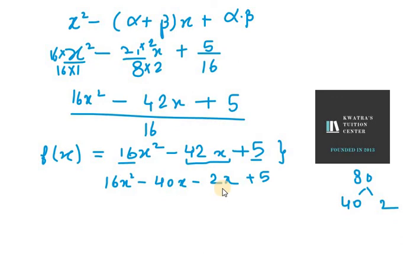Now we need to take common from the first two terms. So we can take common is 8 x, so we are left with 2 x and we are left with minus 5. In the last one we are left with minus 1. We will take one common so we are left with 2 x minus 5.